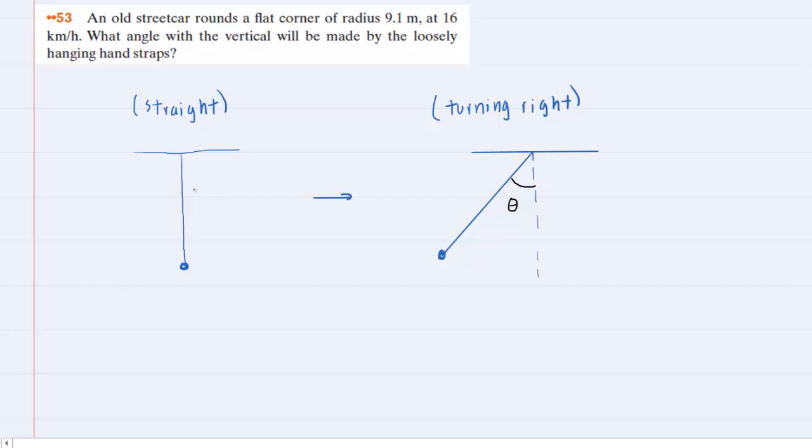To understand this question, we have drawn two pictures. In this first picture, we assume that the streetcar is just driving straight ahead. In that case, the straps would be hanging straight down.